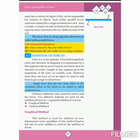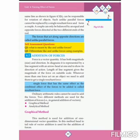You have learnt in class that scalar quantities are those quantities that require only magnitude to be defined, while vector quantities require both magnitude and direction. Force is a vector quantity, so simple mathematical addition cannot be used to add forces. Different methods are used to add vector quantities — one is the graphical method, where we apply the head-to-tail rule, and the other is the analytical method.